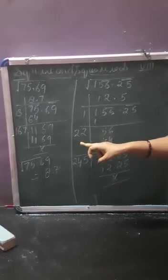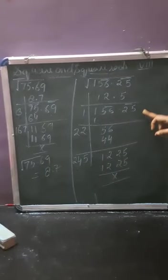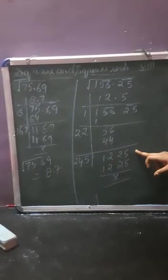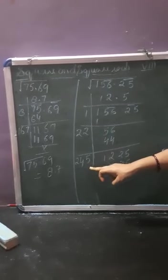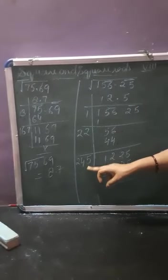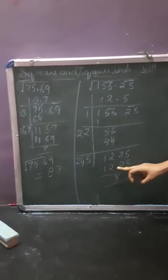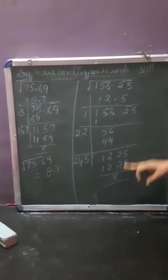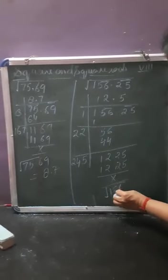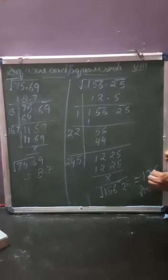Now in the next step, 22 plus 2 is 24. After the decimal, we are getting the pair 25, so we write 25 over here. After 12, it will be coming 1225. Now in the table of 5 — 5 times 5 is 25 — so in the ones place we are getting 5. That is 245 multiplied by 5, which gives 1225. The remainder is 0. So the square root of 156.25 is coming 12.5.